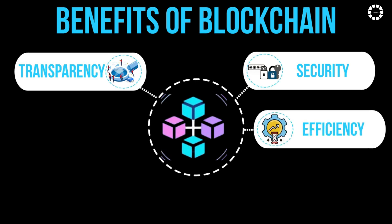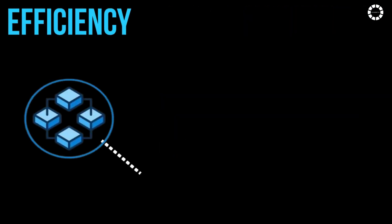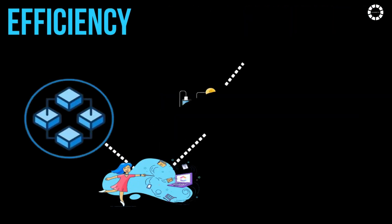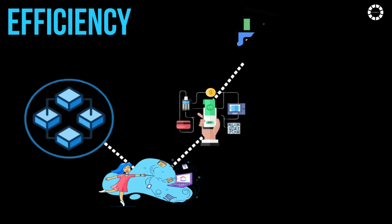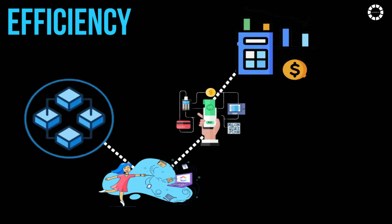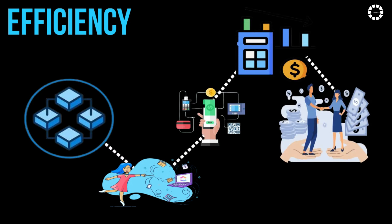Efficiency: Blockchain streamlines processes by removing intermediaries and automating tasks, leading to faster transaction settlement times and reduced costs associated with intermediaries.